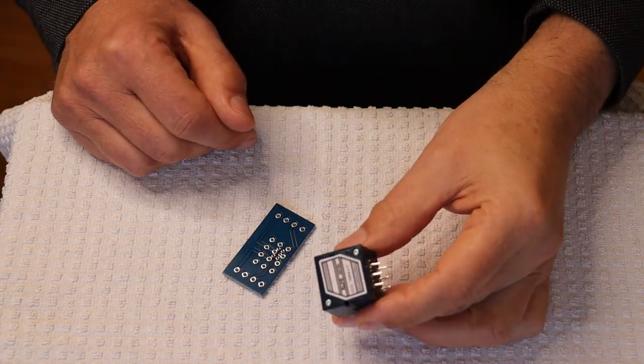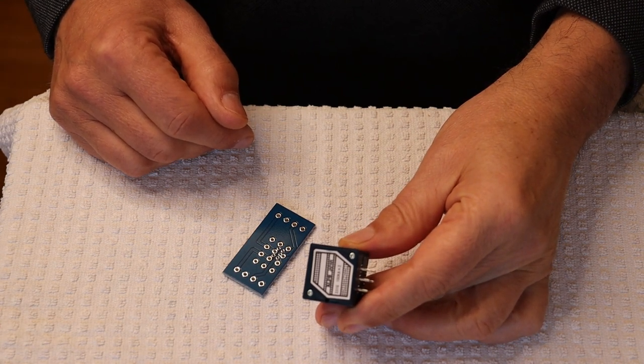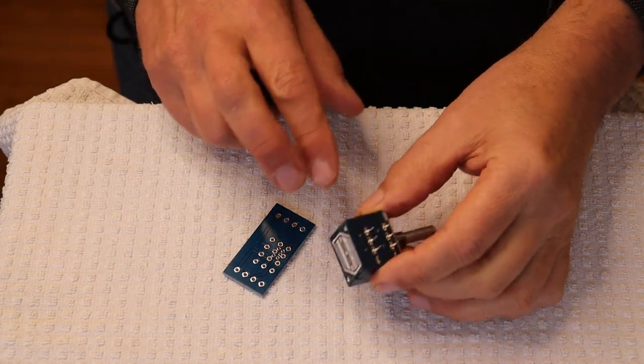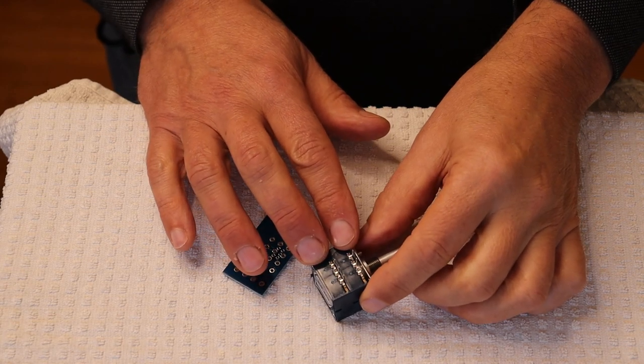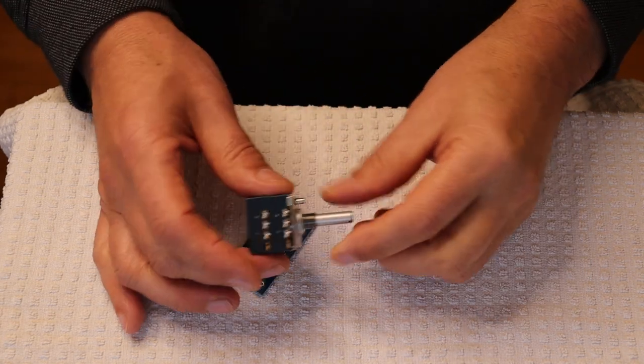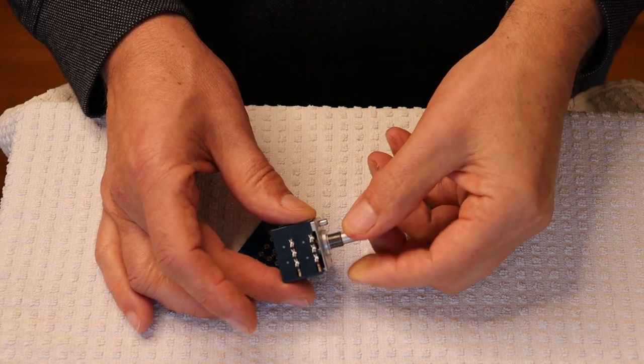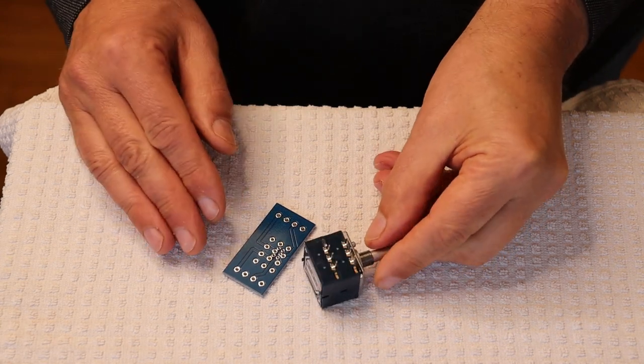These are our standard volume pots. They're a stereo 100K ALP, and what that means is that we have basically two volume pots inside one chassis. And that means when you rotate your volume knob, you're changing the volume for both the left and right channel. Now, these work really well.